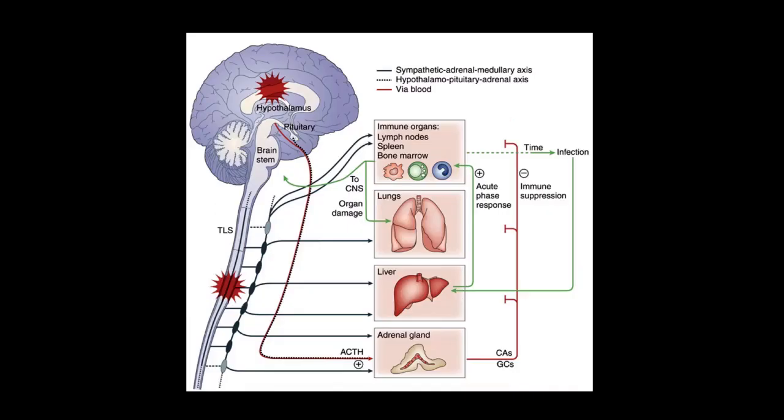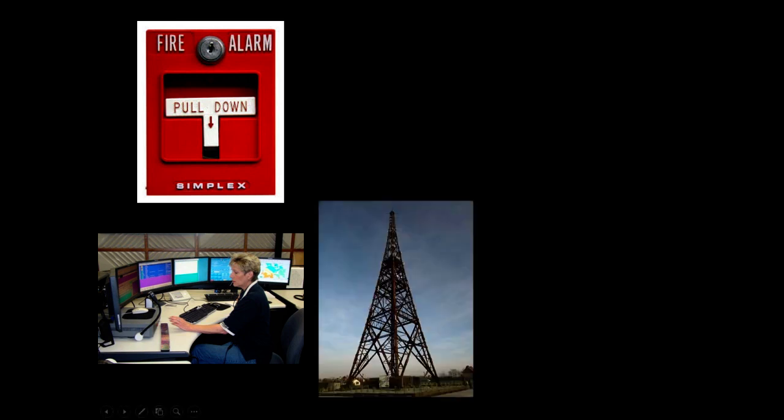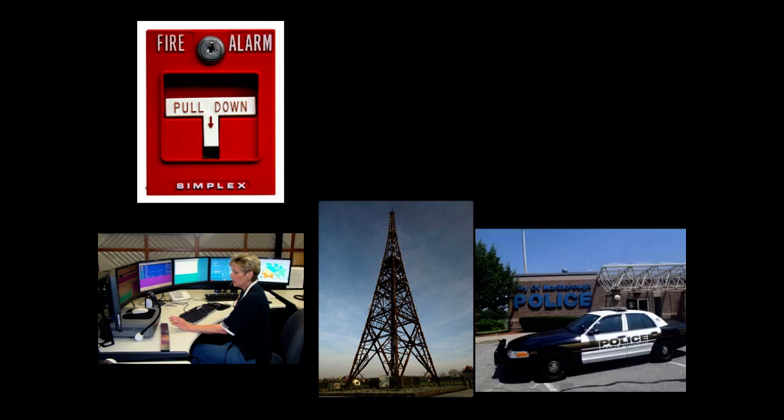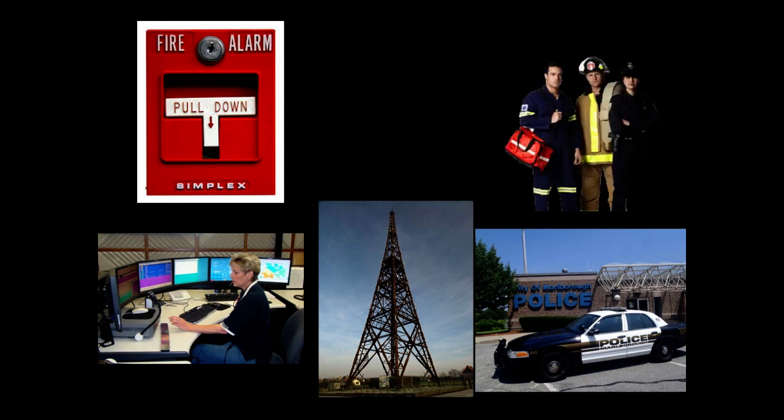The amygdala activates the hypothalamus — the head ganglion of the autonomic nervous system — which then activates all of the preganglionic neurons from T1 to L3, activating the whole sympathetic system. The hypothalamus also activates via ACTH the adrenal gland to release epinephrine systemically. The hypothalamic-pituitary axis is like the 911 operator in your brain getting the signal out to emergency departments — the sympathetic nervous system (T1–L3) and adrenal gland are like the police and fire stations, and norepinephrine and epinephrine are the emergency responders.